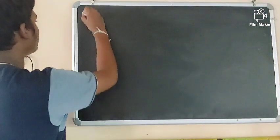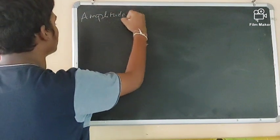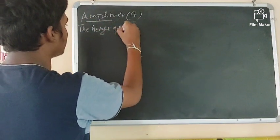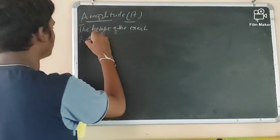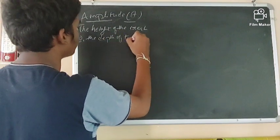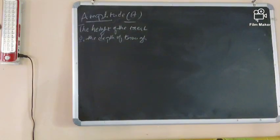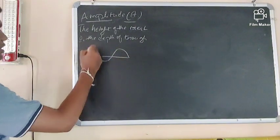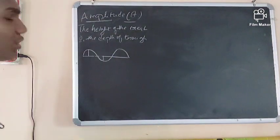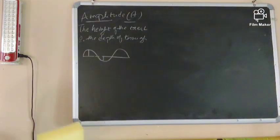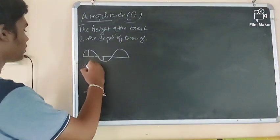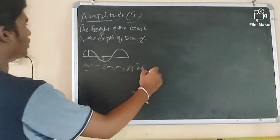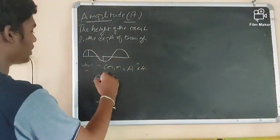Now let us discuss amplitude. The height of the crest or the depth of the trough is called amplitude. It is denoted and measured in centimeters, meters, angstroms, etc. Amplitude is directly proportional to intensity.